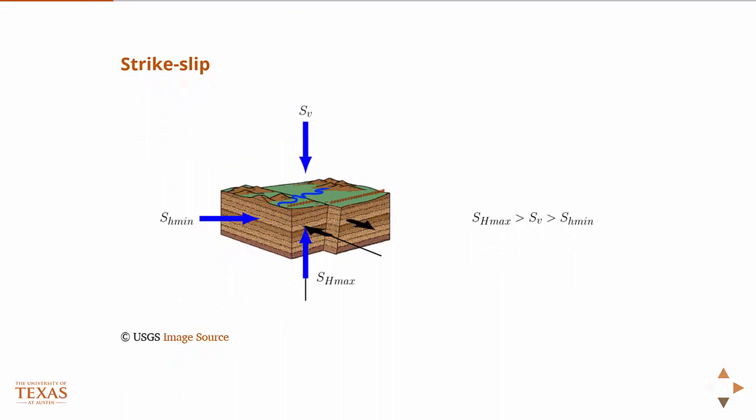And so then the third case is the strike slip fault. And in this case, the vertical stress is in between the maximum, minimum, horizontal stresses. And, you know, I had to put these blue vectors on here.